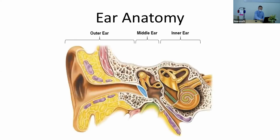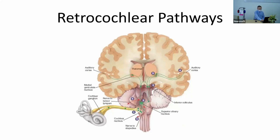Starting with ear anatomy: there are three main parts of the human ear — outer ear, middle ear, and inner ear. The main part of the inner ear is the cochlea. After this, there are retro-cochlear pathways, which consist of the auditory nerve and different structures of the brain, like the brainstem and up to the auditory cortex.